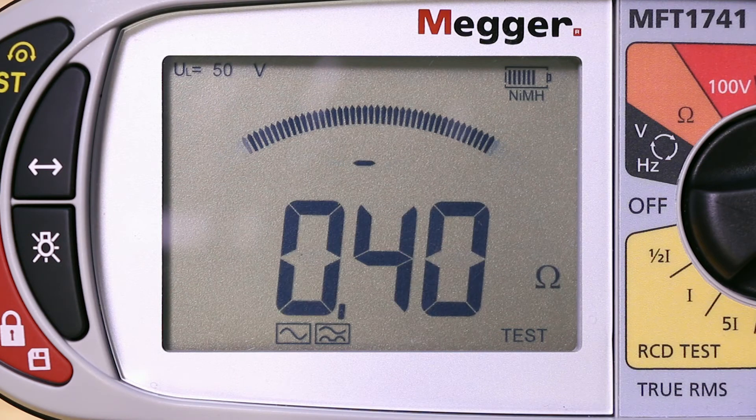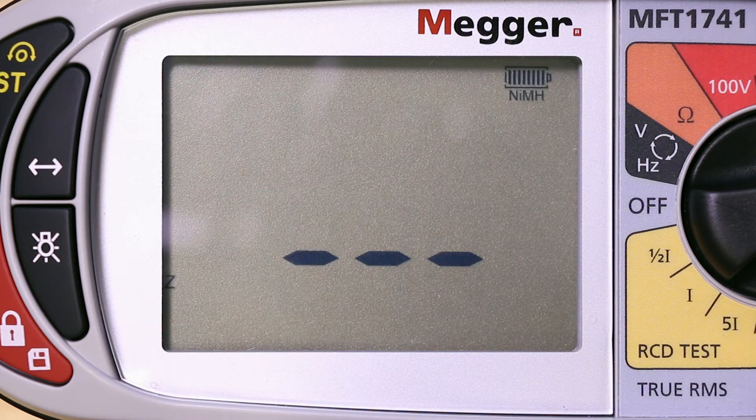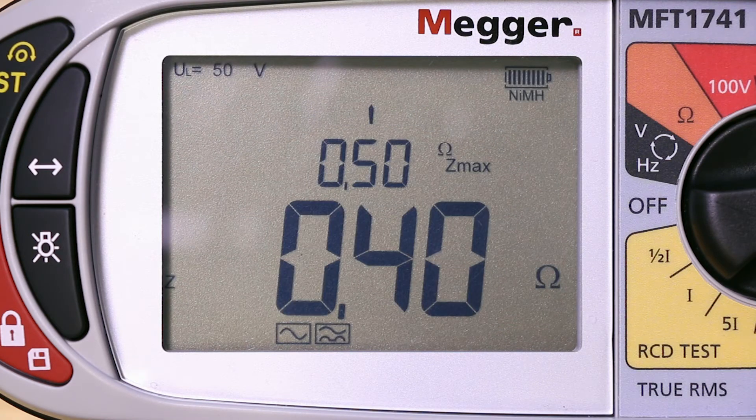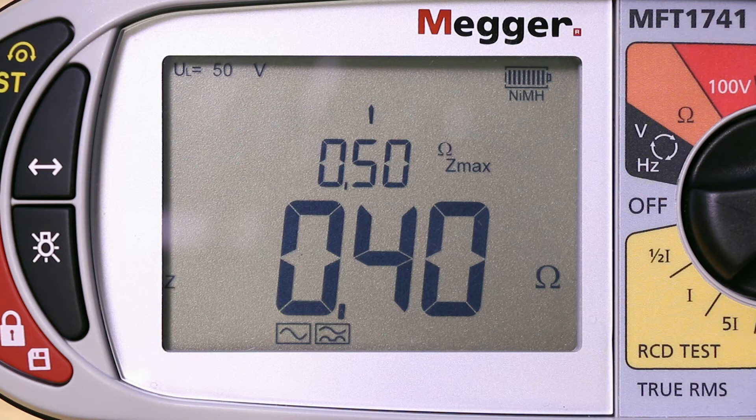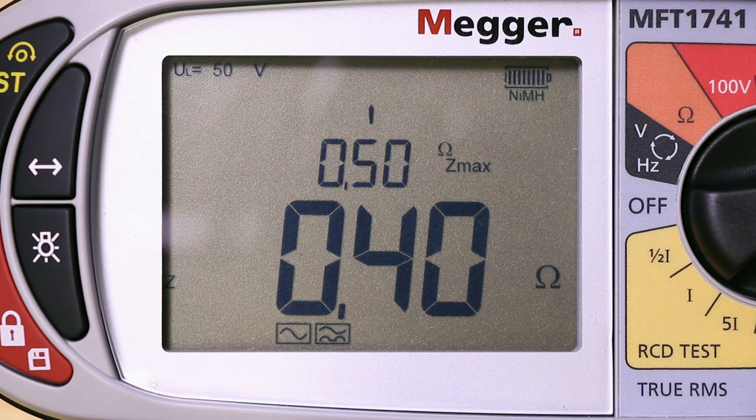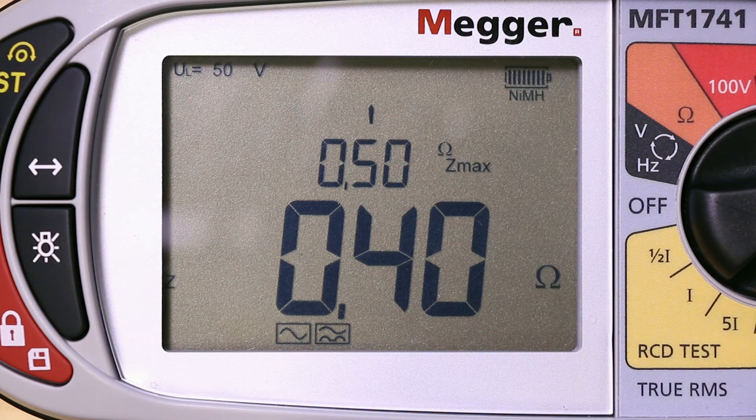When we test at our second socket, you can see we have a result of 0.4 ohms. The original reading of 0.5 ohms is retained in the upper display.